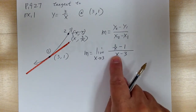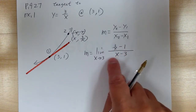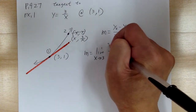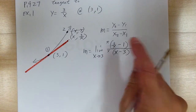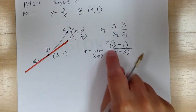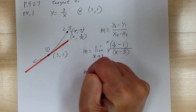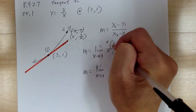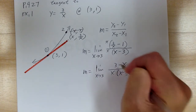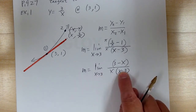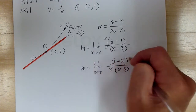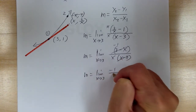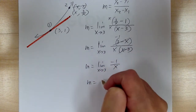You have a complex fraction, so multiply by the common denominator x on both numerator and denominator. Don't multiply out the denominator part — the purpose is to cancel it. When you multiply out you get 3 minus x over x(x minus 3). The (3 minus x) and (x minus 3) cancel to give negative 1, so slope equals the limit as x approaches 3 of negative 1 over x, which gives slope equals negative 1/3.